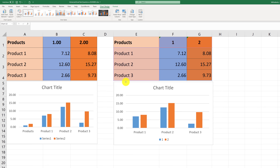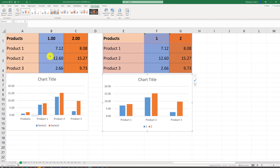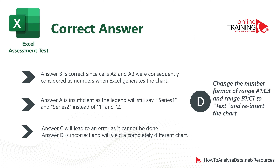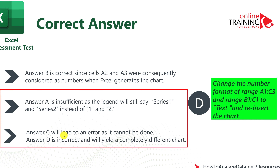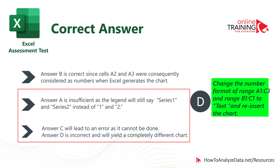Once we reinsert the chart, it correctly represents the values — it only shows values for products 1, 2, and 3, and no longer includes values for the column headers. The correct choice is D. Answer A is insufficient because the legend will still say Series 1 and Series 2 instead of the correct labels. Answer C will lead to an error. Answer D — wait, the incorrect answers are A, C, and the mislabeled D — these either fail or yield a completely different chart.